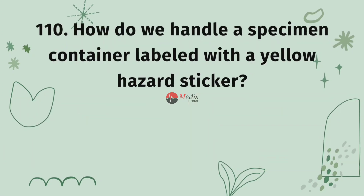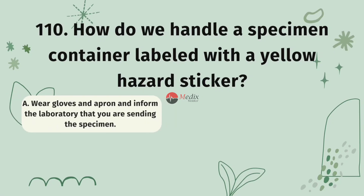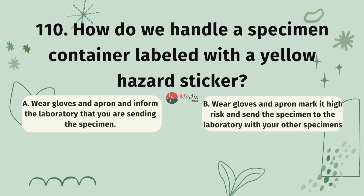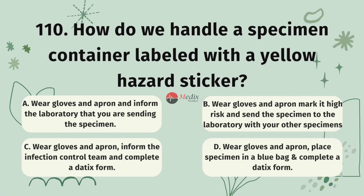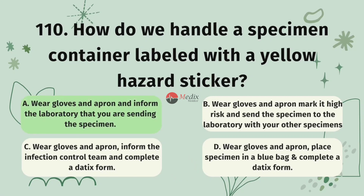Question 110. How do we handle a specimen container labeled with a yellow hazard sticker? Option A, wear gloves and apron and inform the laboratory that you are sending the specimen. Option B, wear gloves and apron, mark it high risk, and send the specimen to the laboratory with your other specimens. Option C, wear gloves and apron, inform the infection control team, and complete a Datix form. Option D, wear gloves and apron, place specimen in a blue bag, and complete a Datix form. The correct answer is A.